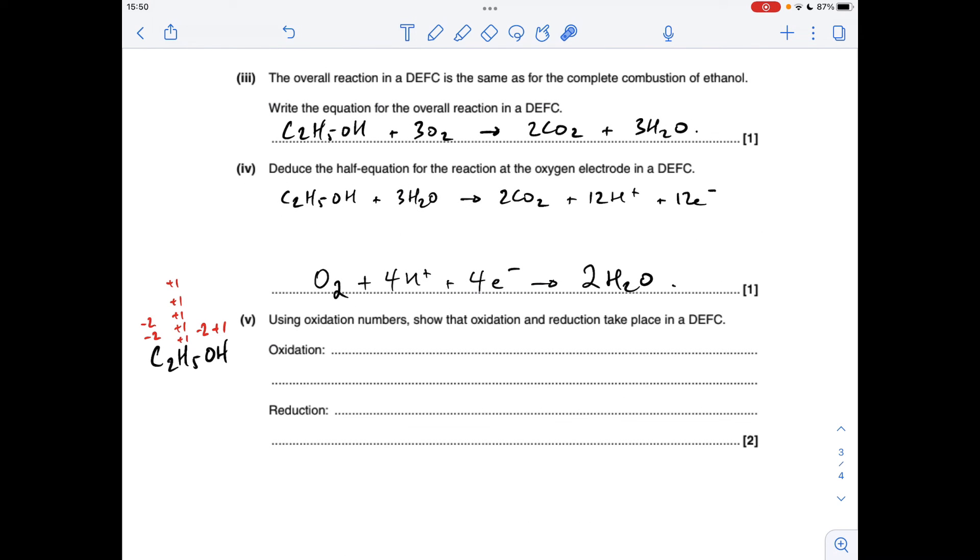And the final part. So what's been oxidized, what's been reduced. So I've got my ethanol formula there with some oxidation numbers in. So hydrogen's obviously plus one each. So we've got six hydrogens in ethanol. So we've got plus six. That oxygen's minus two.